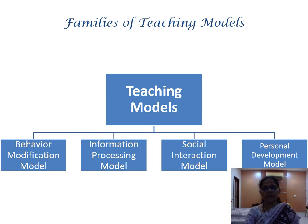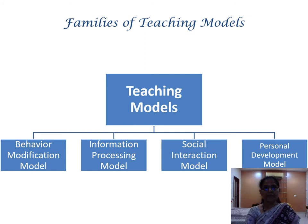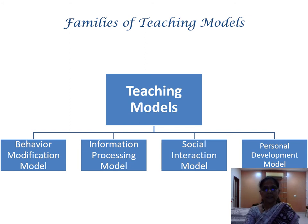The second model, the information processing model, focuses on the brain and its activities. While the behavior modification model emphasizes the modification of outward behavior, the information processing model focuses on what is happening inside your brain: how information is perceived, stored in memory, retrieved, analyzed, and interpreted; how you form concepts, solve problems, and develop a principle from information and concepts. This supports the cognitive theory of learning.